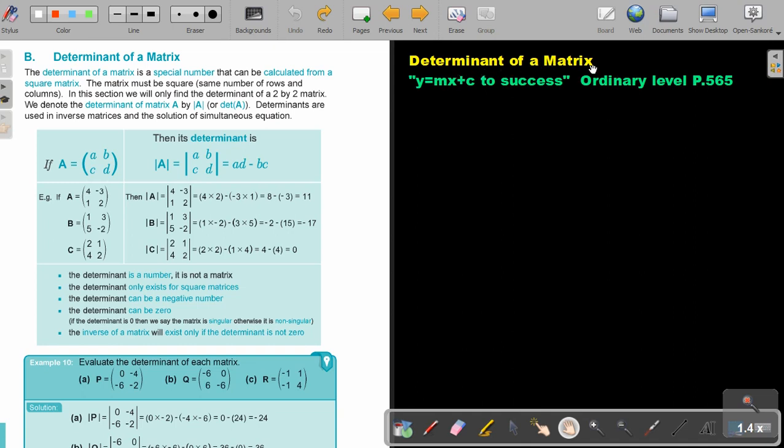Determinant of a matrix. You will find this on page 565 in the Namibia Ordinary Level Mathematics textbook, Y equals MX plus C to success. The determinant of a matrix.